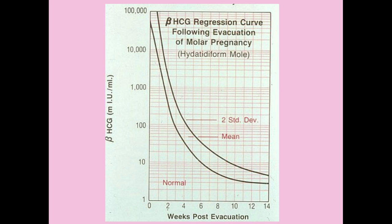Let's say our patient has a complete molar pregnancy. We're following her up; we've done the D&C and we're following her with weekly HCG levels, waiting for it to come down into the normal range. She's progressing just fine, staying within that mean. And suddenly she has an HCG level that plateaus and now is rising again. This means she has a persistent mole, and we consider that to be malignant disease.